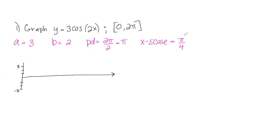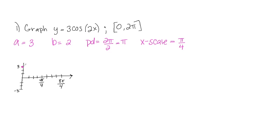My x-scale is pi over four, so I label the x-axis in increments of pi over four: pi over four, two pi over four, three pi over four, four pi over four, five pi over four, six pi over four, seven pi over four, eight pi over four. This is a cosine function, so it starts at its maximum. I then go back and forth: three, zero, negative three, zero, three, zero, negative three, zero, three — bouncing between the maximum and minimum with zeros in between.